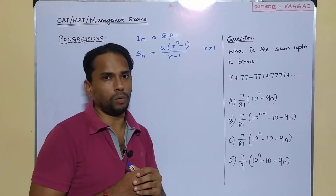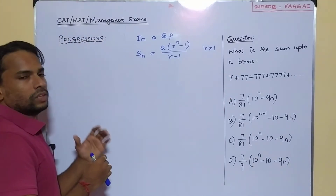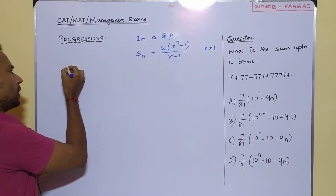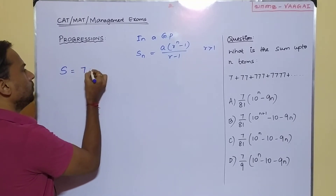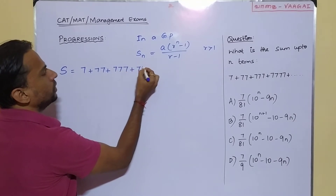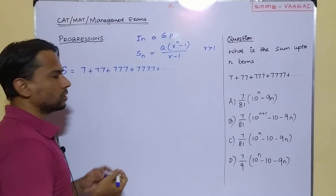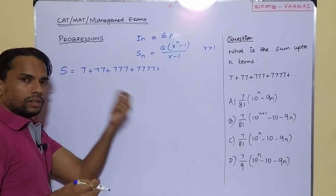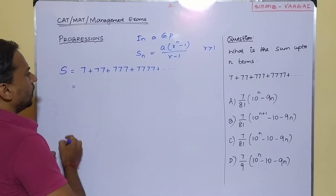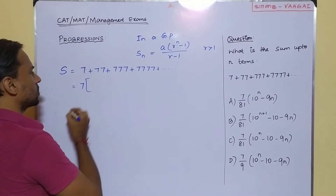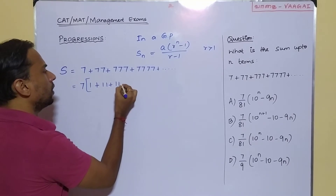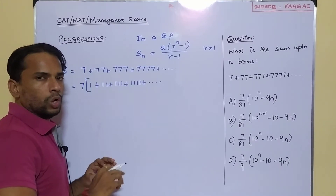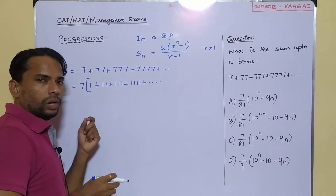Now let us get into the problem. Our series is 7 plus 77 plus 777 and so on. I am going to take my sum as S. So S equals 7 plus 77 plus 777 plus 7777 and so on, up to n terms. Since all the digits are 7, let me take 7 as a common factor outside. Inside, I will have 1 plus 11 plus 111 plus 1111 and so on — only digits with 1.